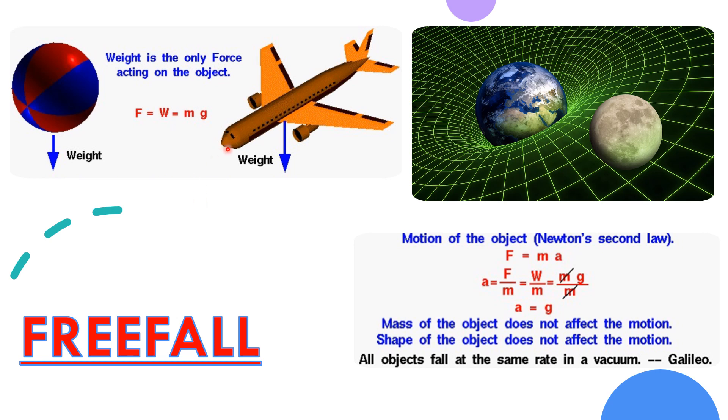Near the surface of the moon, the acceleration due to gravity is one-sixth of earth's gravity.